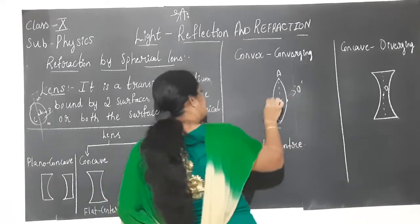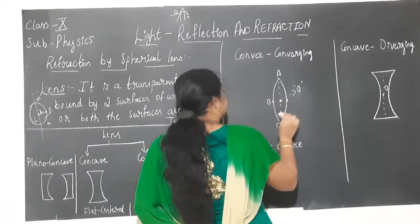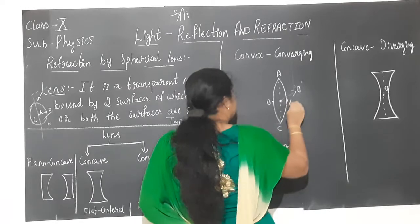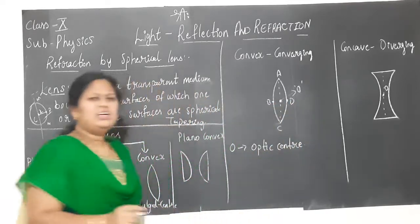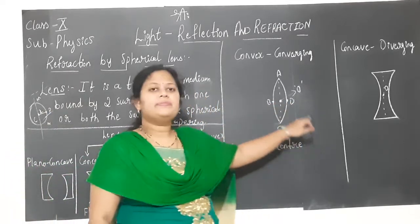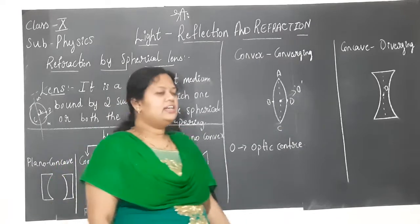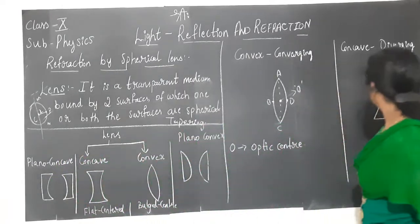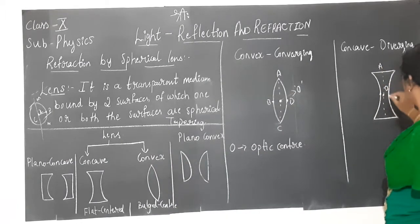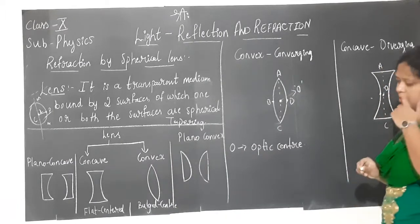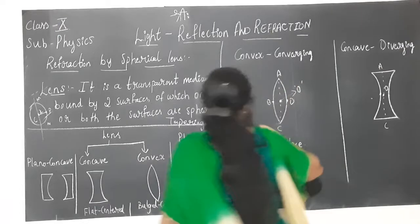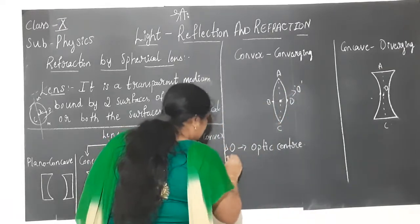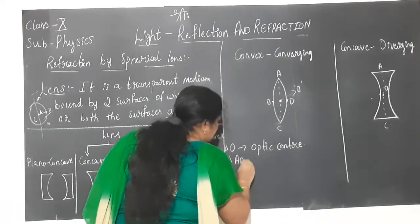I will mark the aperture points A, B, C and A, D, C. The lens has two spherical surfaces: ABC is one, and ADC is the second. You can label the aperture accordingly. First we noted the optic centre, and next we identify the aperture.